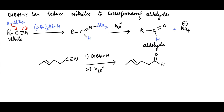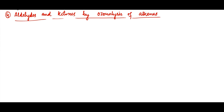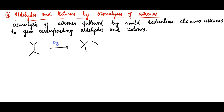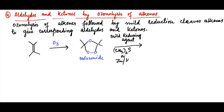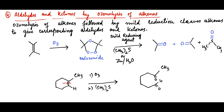The fourth synthetic method is synthesis of aldehydes and ketones by ozonolysis of alkenes. Ozonolysis of alkenes followed by mild reduction cleaves the carbon-carbon double bond to give the corresponding aldehydes and ketones. For example, an alkene upon treatment with ozone forms a molozonide, which is then subjected to mild reducing agents like dimethyl sulfide or zinc to give the corresponding aldehydes and ketones. Consider 1-methylcyclohexene: upon ozonolysis followed by reduction with dimethyl sulfide, it forms 6-oxoheptanal. The shortcut is to break the carbon-carbon double bond and restore the carbon-oxygen double bond on both carbons.